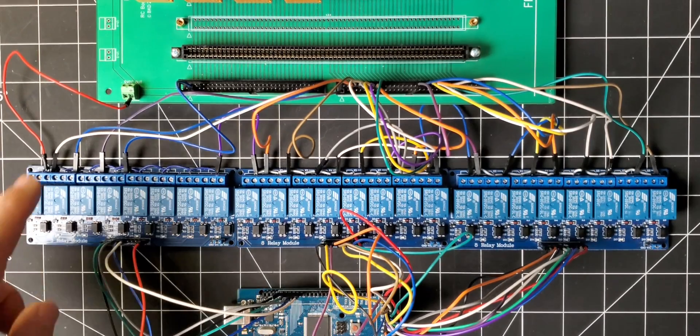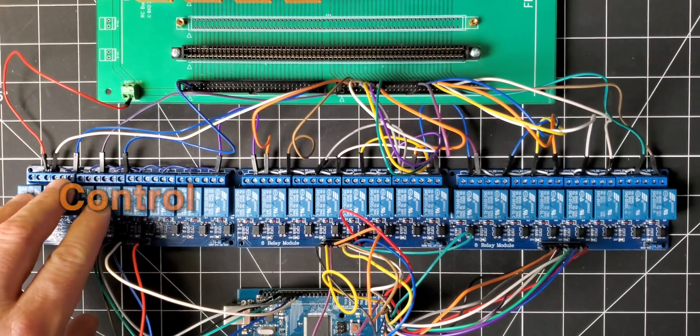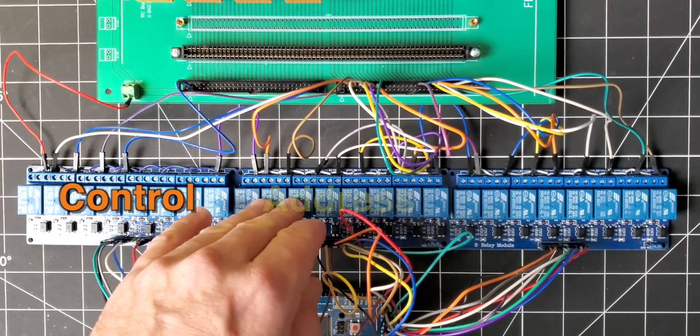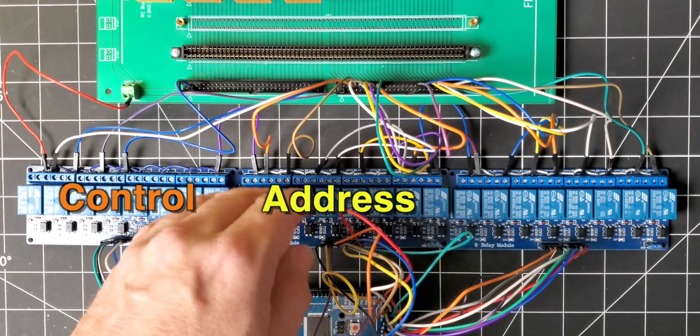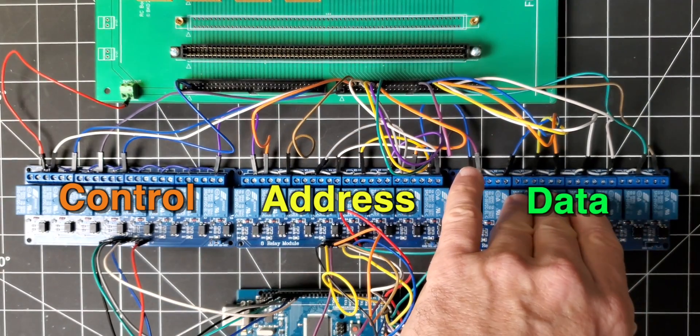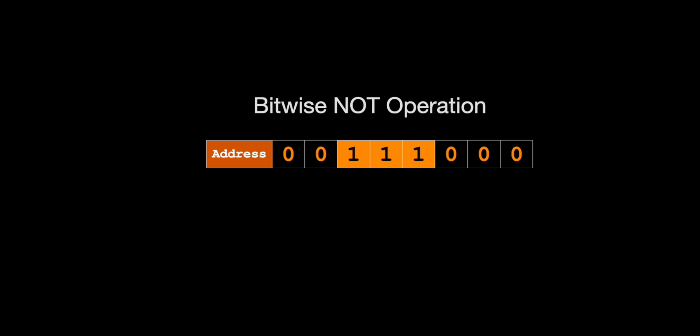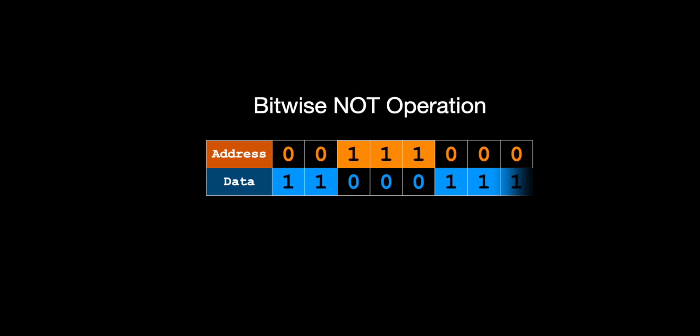A quick overview of the Arduino setup here. On the left, we have the relays that are responsible for the control lines. And in the middle, these ones are responsible for the address lines. And this one on the right is responsible for the data lines. Reading back the values to the Arduino is not always reliable. So I'm going to be visually checking the data values. And to make this easier, I'm going to apply a bitwise not operator against the address value to produce a data value.